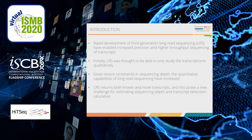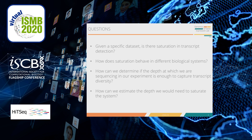Taking this into account, we have the following questions: Given a specific dataset, is there saturation in transcript detection? How does saturation behave in different biological systems? How can we determine if the depth at which we are sequencing in our experiment is enough to capture transcript diversity? How can we estimate the depth we would need to saturate the system?